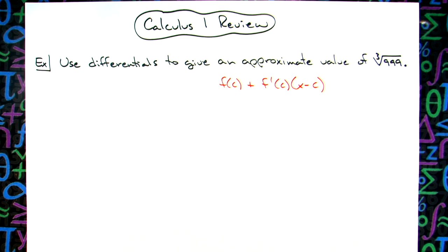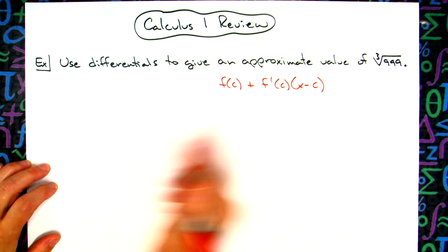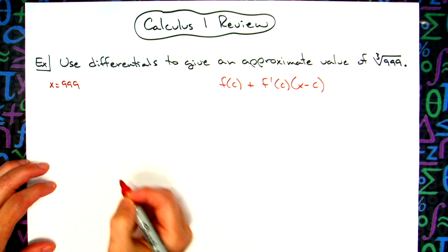What we're going to do is we're going to pick a couple values for x and c. We're going to pick our 999 to be our value for x because that's the number that's given in the problem.